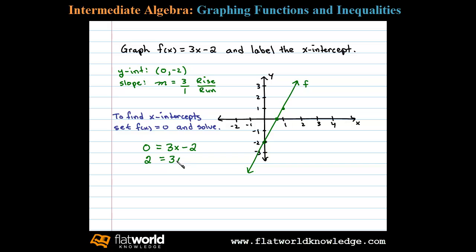Dividing both sides by 3, x = 2/3, and so the x-intercept is (2/3, 0). All that's left to do is to label the x-intercept. Here we have (2/3, 0).